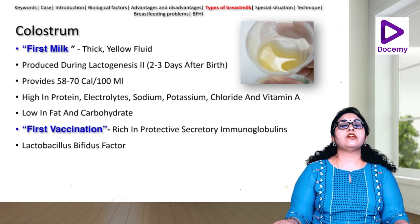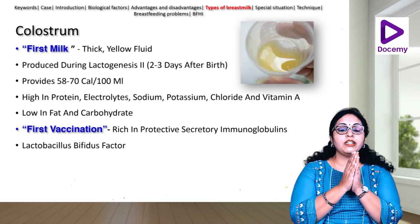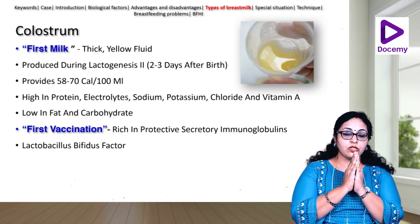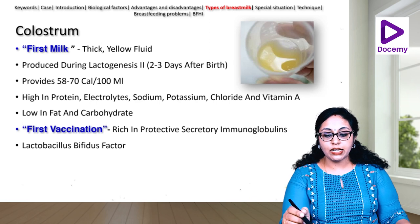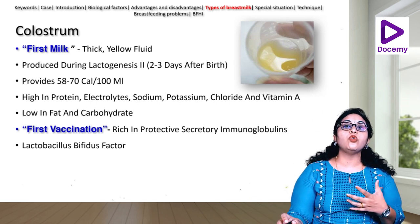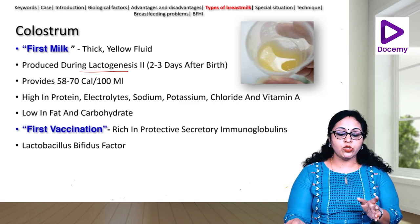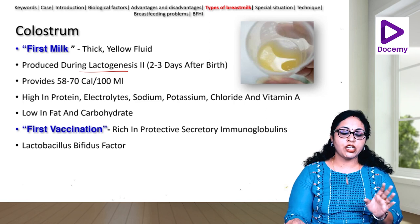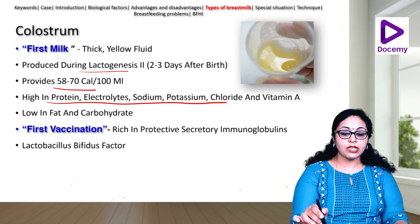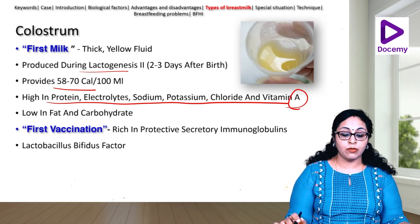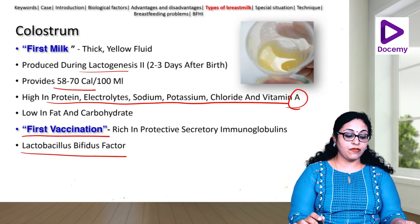Colostrum is called the first milk — also historically called the witch's milk, which is a misnomer. It is a thick yellow fluid — called yellow gold. It is produced in the first 48 hours and gives about 58 to 70 calories per 100 ml. It is high in protein, electrolytes — sodium, potassium, chloride — and vitamin A, and is teeming with immunoglobulins and live cells. That is why it is called the first vaccination. It also contains the lactobacillus bifidus factor.